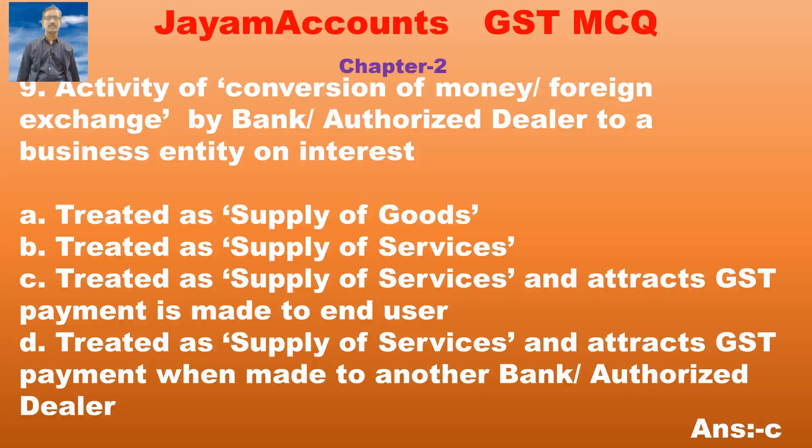Option C: treated as supply of services and attracts GST payment when made to another bank or authorized dealer. The correct answer is Option C: treated as supply of services and attracts GST payment when made to the end user.